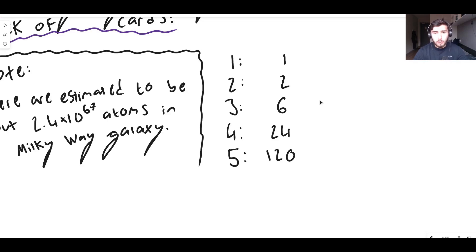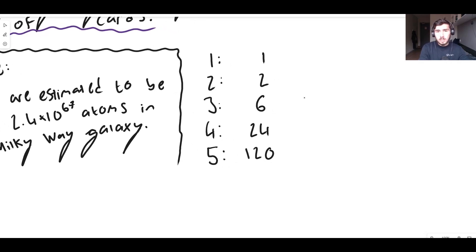Well you might be familiar already but all of these are simply equal to their corresponding factorial number. That's 1 factorial, 2 factorial, 3 factorial, 4 factorial, 5 factorial.